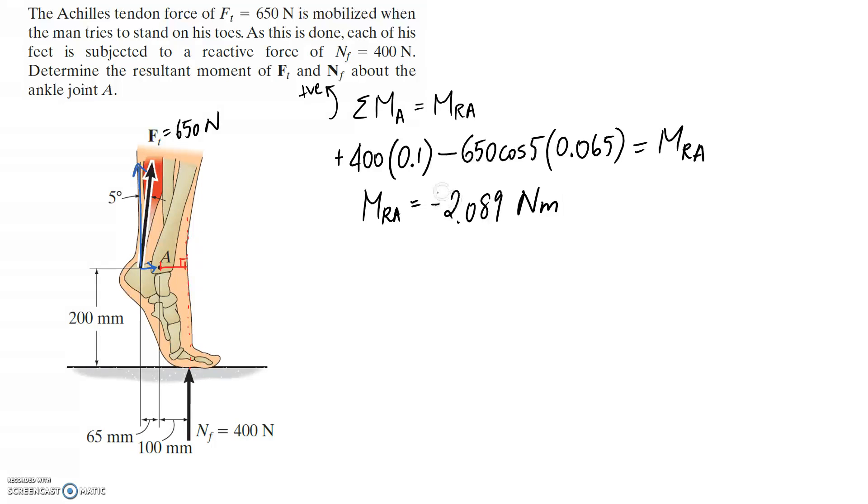This negative, what it's saying is that it's going to be trying to push us in the negative direction for the moment. So if anti-clockwise is the positive direction, it comes out negative, it means it's going to be trying to push us in the clockwise direction. So the resultant of these two forces is a clockwise moment of 2.089 newton meters.